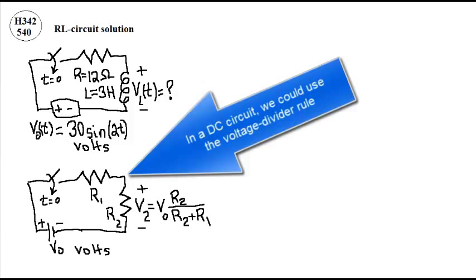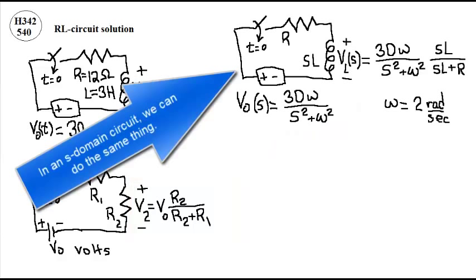In a DC circuit, we could use the voltage divider rule to find the voltage across the second resistor. In an S-domain circuit, we can do the same thing.